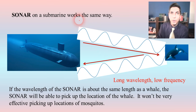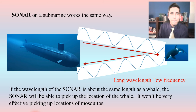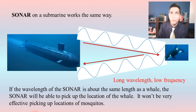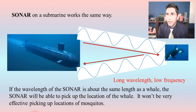As a result, the sonar on the submarine is going to be really good at picking up whales, but not very good at picking up mosquitoes — and if we're talking about things that are about the size of a mosquito, like a tiny little fish, the sonar won't pick those up well either. It's kind of like a bat: it's great at locating bugs but not at locating something the size of a person.